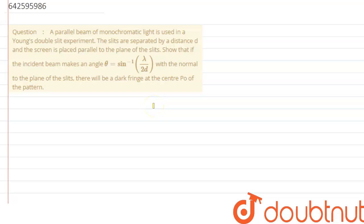Hi everyone, so we are given with a question which says a parallel beam of monochromatic light is used in Young's double slit experiment. The slits are separated by a small distance d and the screen is placed parallel to the plane of the slits.